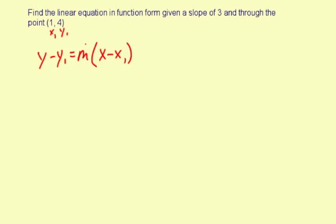All you have to do is substitute the given information and then simplify your answer. Rewriting the equation with substitution: y1 is 4, so it's y minus 4 equals m, which is given as 3 — the slope — times, in parentheses, x minus 1.